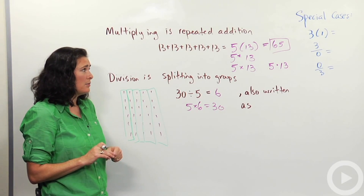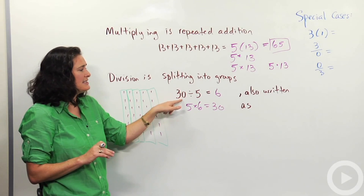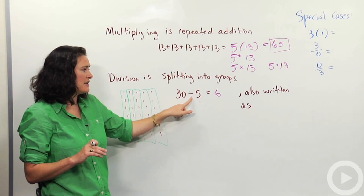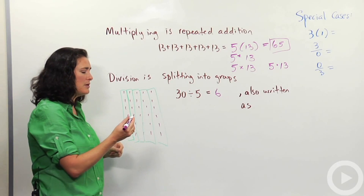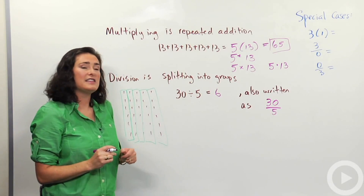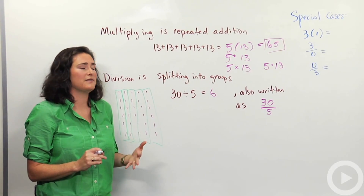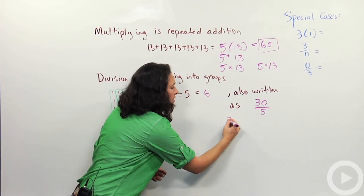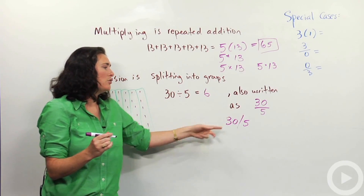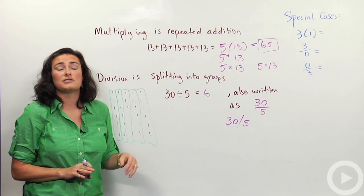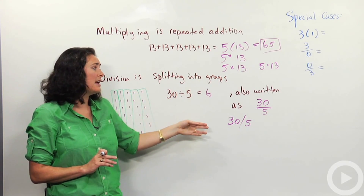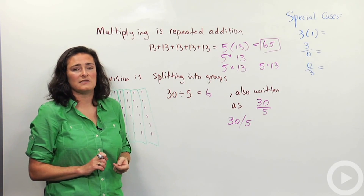One last thing before we look at some special cases: division can be written in different ways. You can use the division sign, or you can write 30 over 5 as a fraction — that is also 30 divided by 5. Or you could write 30 slash 5. All three of these represent 30 divided by 5. That's notation, and just like we have lots of ways to write multiplication, you want to be aware of the different ways we write division as well.